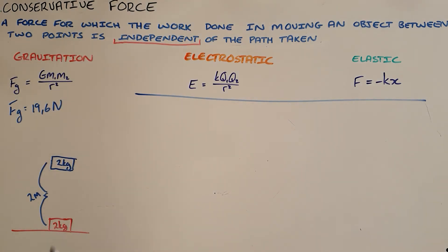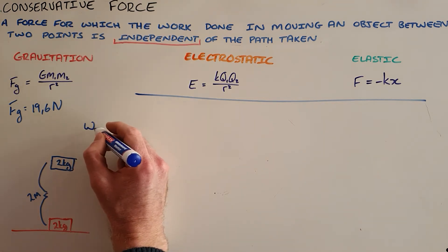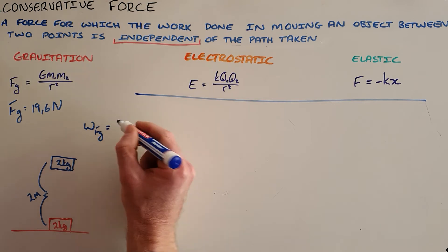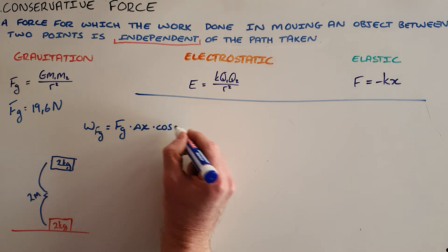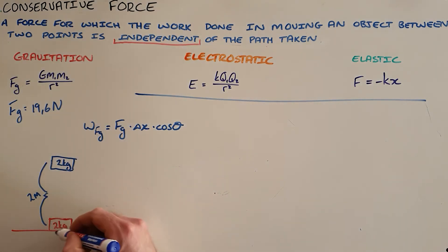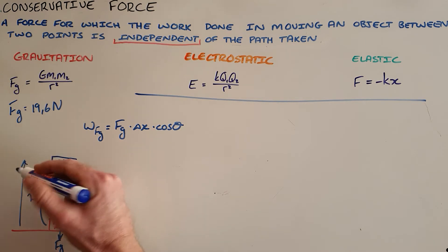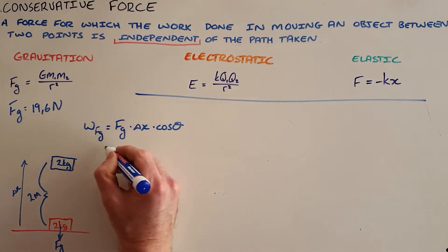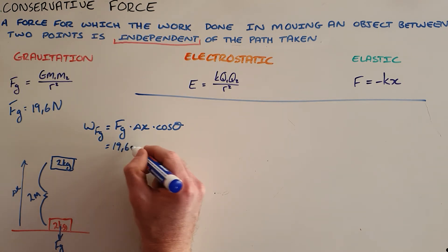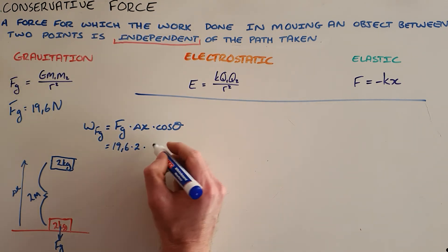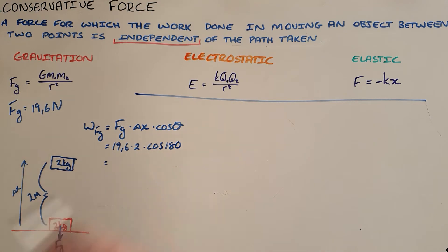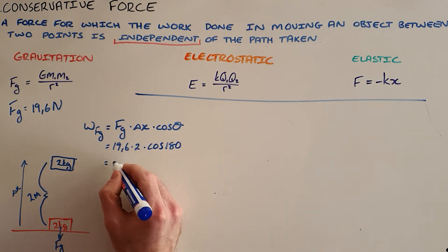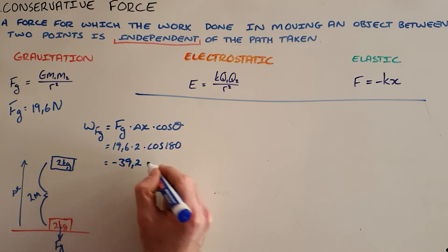In order to raise this object, a certain amount of work is done by the force of gravity. We know that work is the product of the force, the displacement of the object, and the cosine of the angle between them. The force of gravity always acts vertically downward, and the object is displaced vertically upward, so the work done by gravity is 19.6 times 2 meters times cosine of 180 degrees, giving negative 39.2 joules.